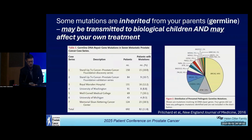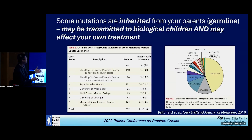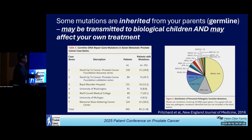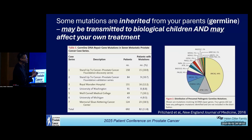One thing we've discovered is that some mutations are inherited from your parents — we call these germline mutations. These can be transmitted to biological children and may affect your treatment. About 12% of men, depending on the study, have a mutation in a DNA repair gene. Surprisingly, BRCA2 — which stands for breast cancer associated gene — was found in about 44% of those cases. While BRCA2 mutations were known to increase breast cancer risk in women, it was underappreciated that they also affect cancer development in men.